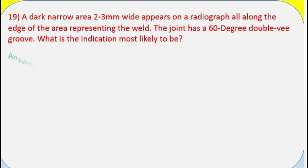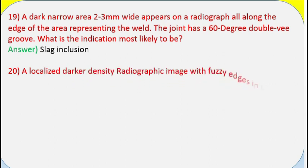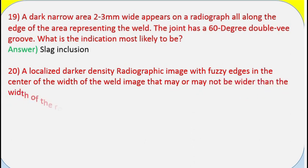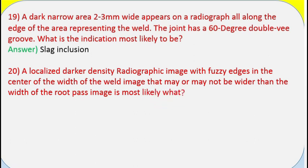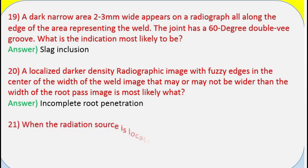Question 19: A dark narrow area 2 to 3 millimeters wide appears on a radiograph all along the edge of the area representing the weld. The joint has a 60-degree double-V groove. What is the indication most likely to be? Answer: Slag inclusion. Question 20: A localized darker density radiographic image with fuzzy edges in the center of the width of the weld image, that may or may not be wider than the root pass image, is most likely what? Answer: Incomplete root penetration.